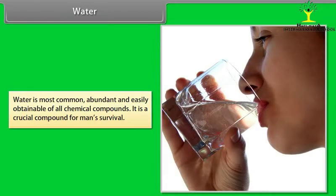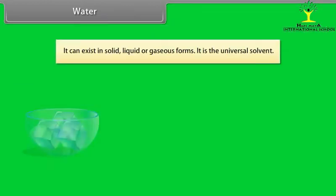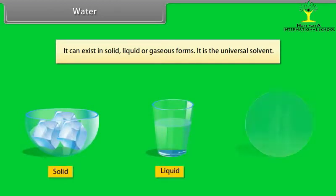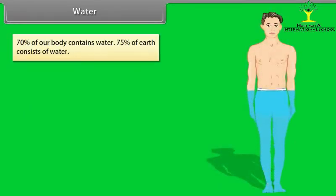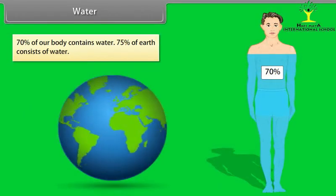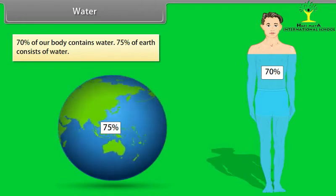Water is most common, abundant and easily obtainable of all chemical compounds. It is a crucial compound for man's survival. It can exist in solid, liquid or gaseous forms. It is the universal solvent. 70% of our body contains water. 75% of earth consists of water.